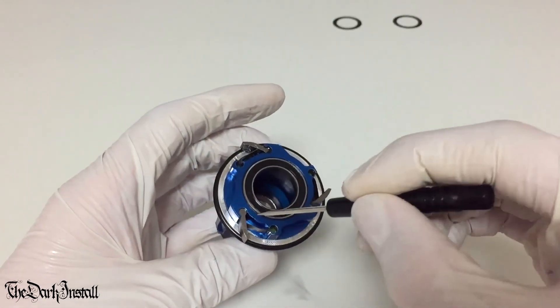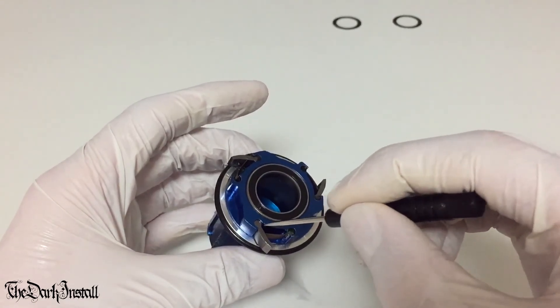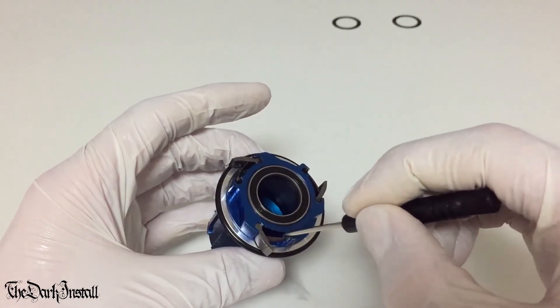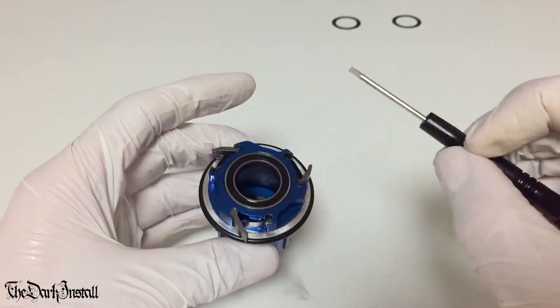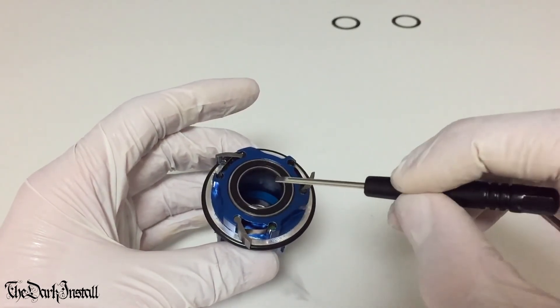Let's assume they're out. And then make sure you've got a nice amount of lube in there. Don't go crazy with the lube, but get it in there. Okay, so that's the free hub taken apart, cleaned, reassembled.